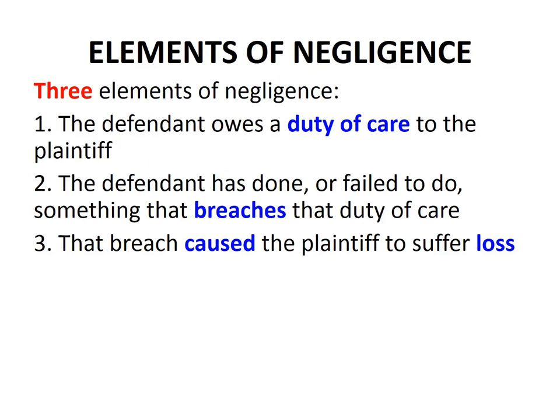For a plaintiff's claim for negligence to be upheld against a defendant, the plaintiff must prove three things on the balance of probabilities — these are the three elements of negligence. The first element is that the defendant owes a duty of care to the plaintiff. The second element is that the defendant has done or failed to do something that breaches that duty of care. And the third element is that the breach of the duty of care caused the plaintiff to suffer loss.